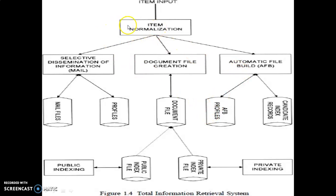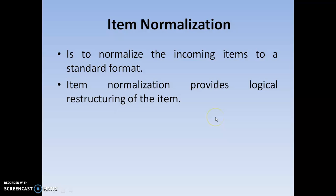In the previous video, I discussed item normalization clearly. Now we are going to discuss the next components after item normalization. Item normalization is nothing but putting all the items you want to search into a standardized format. For example, alphanumeric data can be put in a standardized format like Unicode. Multimedia objects can be normalized in standard forms like MPG, JPG, GIF, and BMP. This logical reconstruction into standard formats is called item normalization.